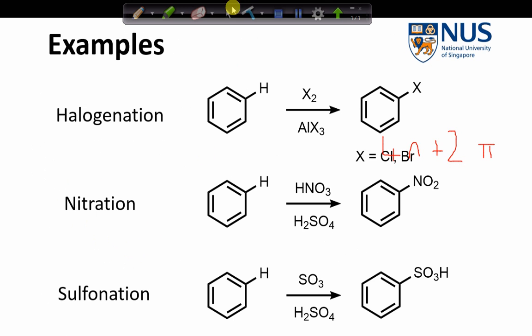So here are a few examples of electrophilic aromatic substitution: halogenation, nitration and sulfonation. So in each example we see simply that the proton is being substituted by here a halogen, here a nitro group and here a sulfonate group. And each reaction requires an acidic catalyst to help it along its way.